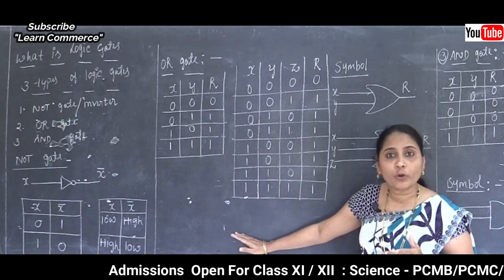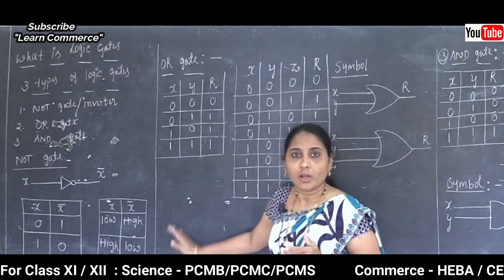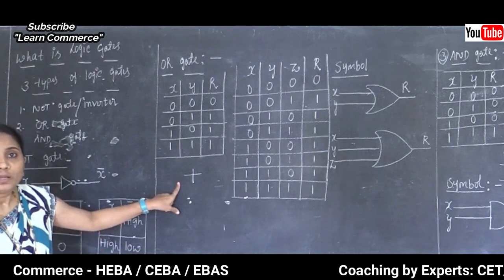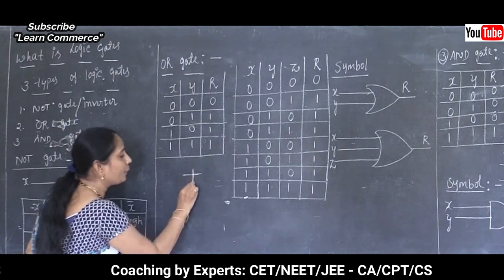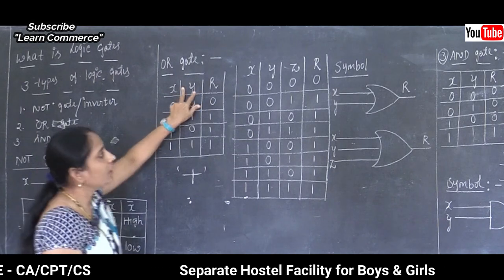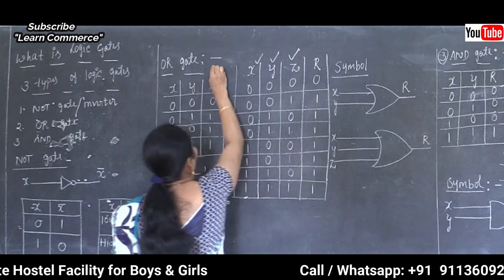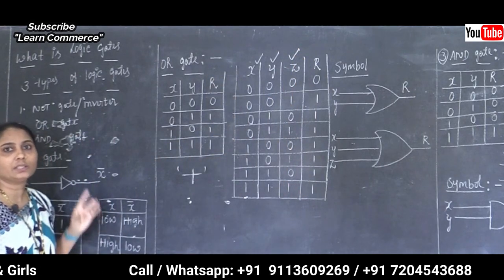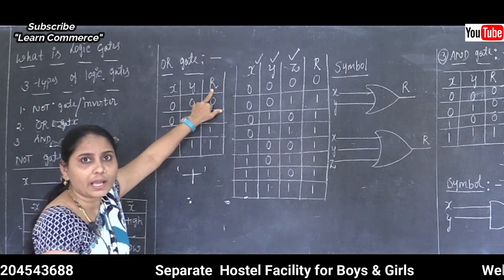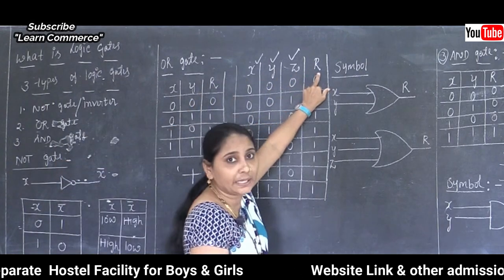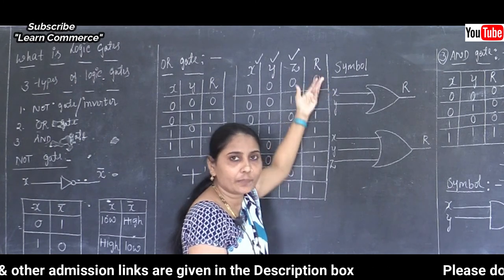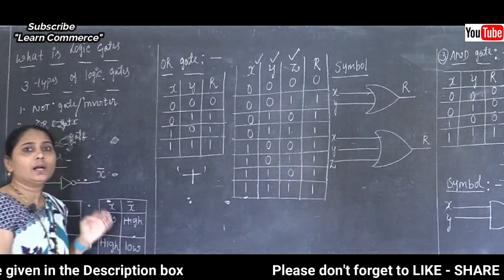The output of the OR gate will be the logical addition of the inputs. The logical addition symbol is the plus (+) sign. The column name for output is R (result). You can also write it as X plus Y, or X plus Y plus Z for three variables.